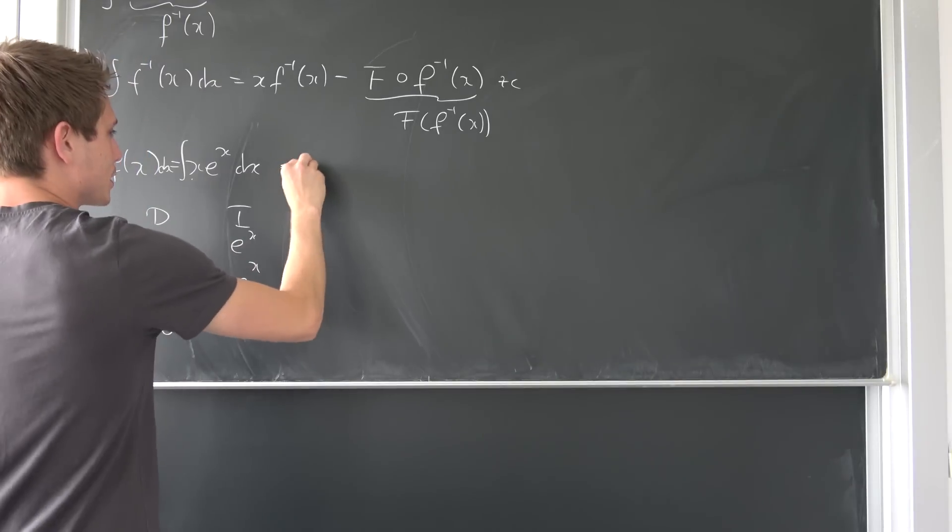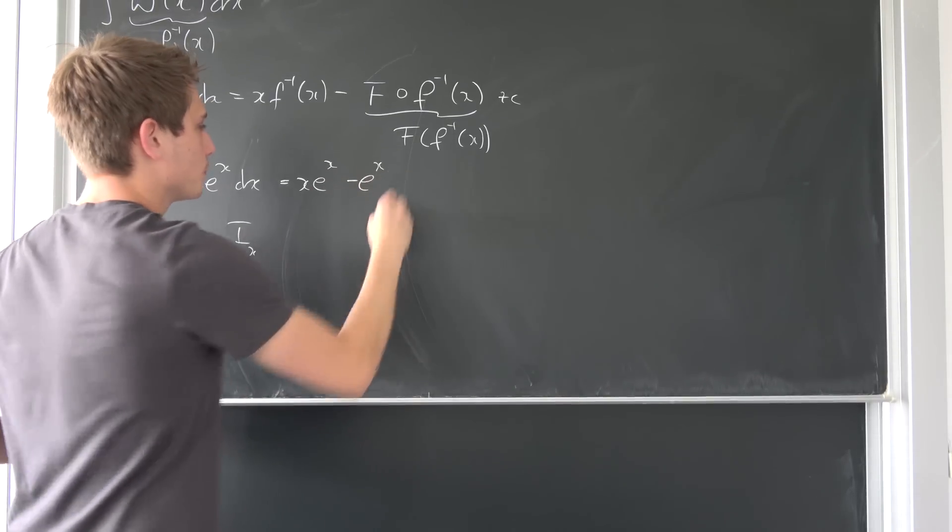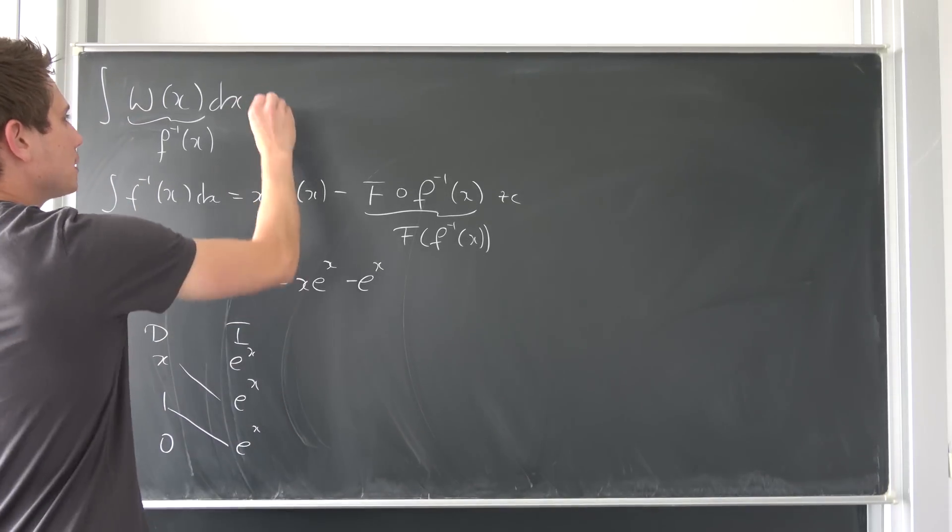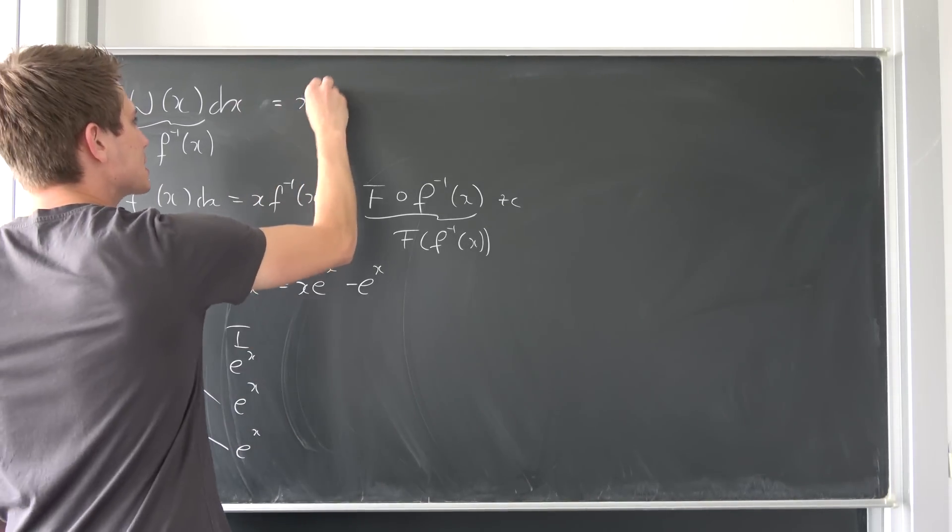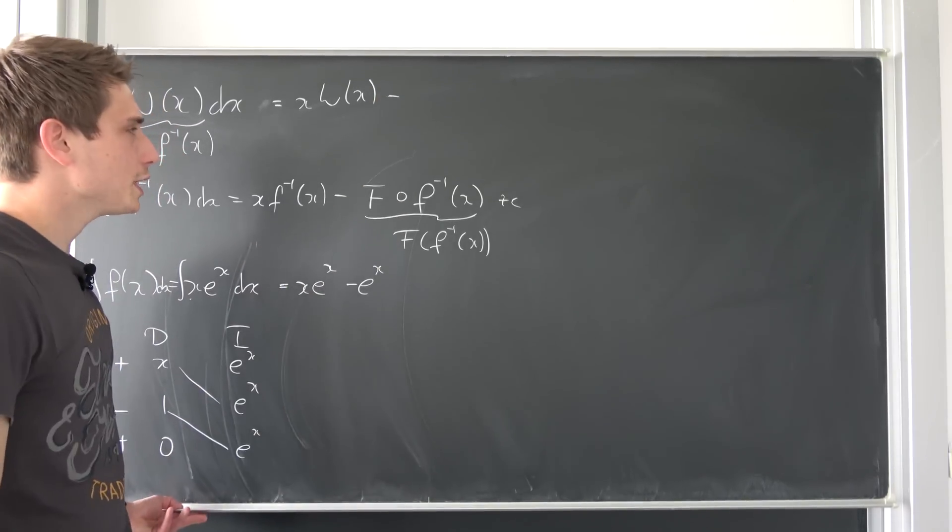So let's plug this in. This is just x times e to the x, and then minus e to the x. And now we have found out everything that we actually need and we are going to plug it into here. So the first part is just x times Lambert of x, minus, and now we want to...